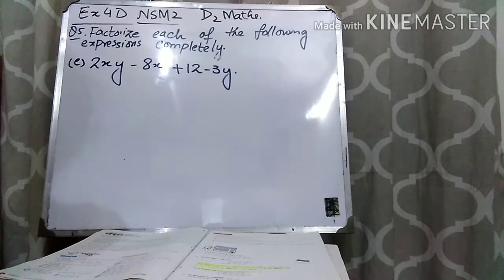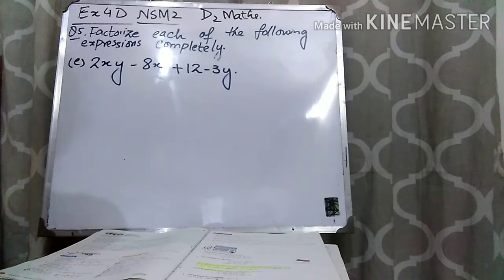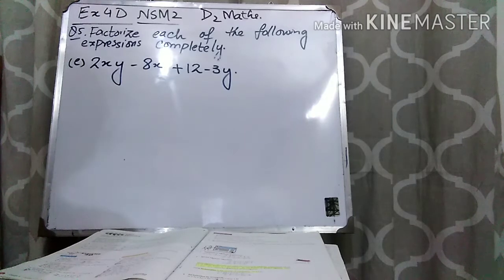Question number 5 is that we have to make the factors. I have explained the first 4 parts and you can watch that video which I have uploaded. Today I will explain part E and onwards.